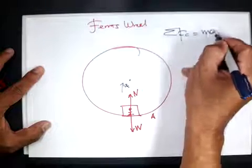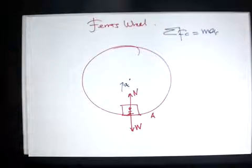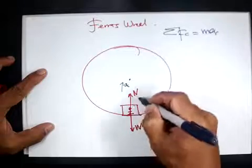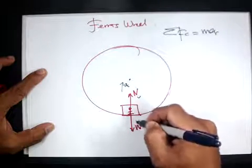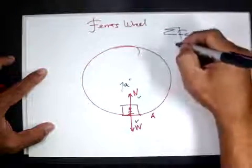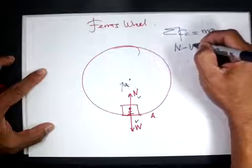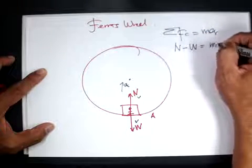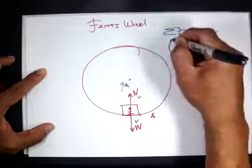Forces that are parallel to A is the FC. We have total force equal to MAC. In this case, same direction positive, opposite direction negative. We have N same direction, W opposite direction, so N minus W equal to MAC. This is FC, centripetal force.